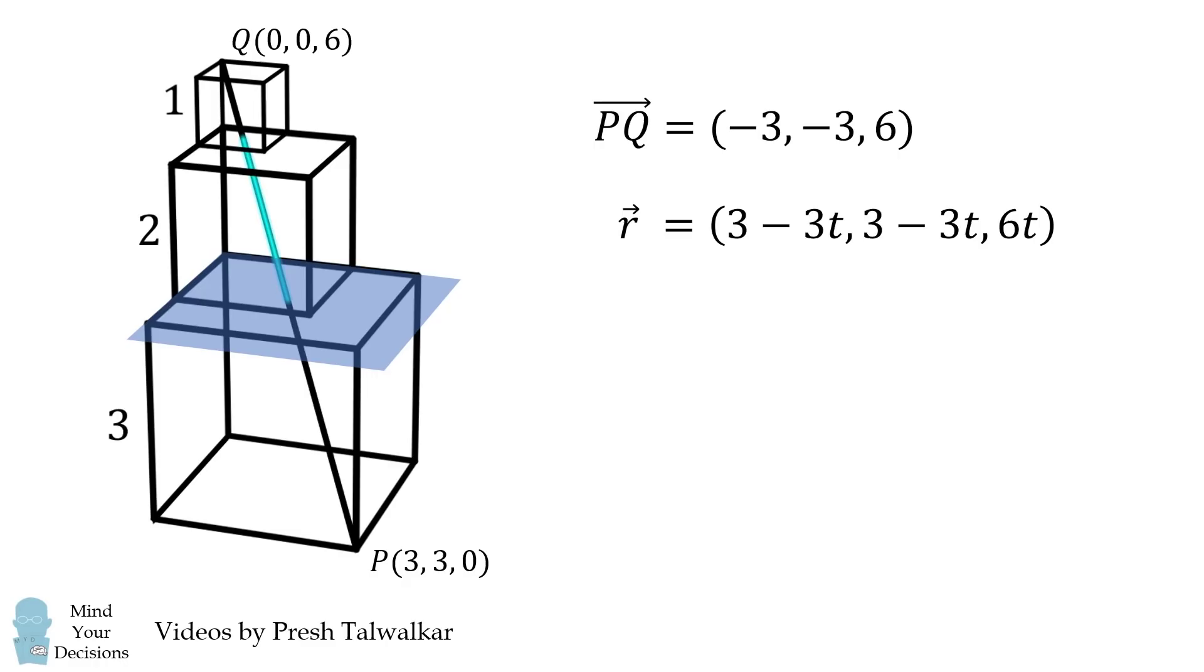We want to figure out the portion that's contained entirely inside the middle cube. Notice the intersection of this line with the plane z equals 3 will give us one endpoint of this line segment. If z is equal to 3, that means 6T is equal to 3. Consequently, T is equal to 0.5, and the point we're looking for will be equal to (1.5, 1.5, 3).